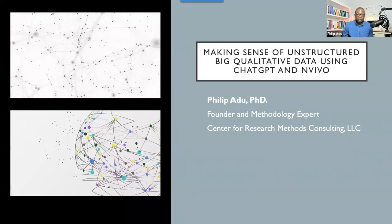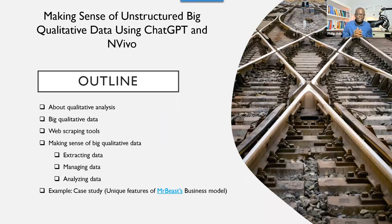And also after my presentation, you can be able to ask me questions and I'll be happy to address them for you. So we are here to make sure that the information that we're going to present will be meaningful to you. So as you can see on the slide, making sense of unstructured big qualitative data using ChatGPT and NVivo. I'm going to talk about qualitative analysis, big qualitative data, web scraping tools, and also making sense of your big qualitative data. And we're going to also do some kind of application — a case study looking at the features of a business model used by Mr. Beast.